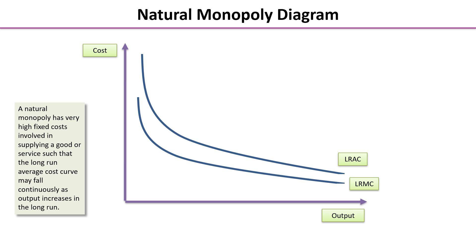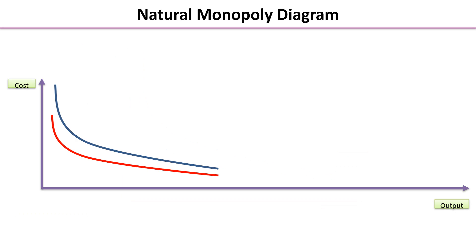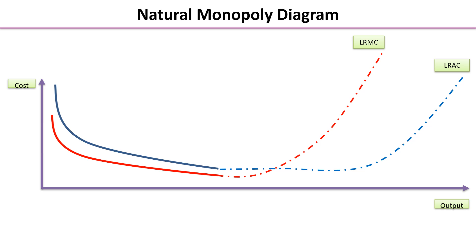We've got the long-run marginal cost below the long-run average cost. This can be difficult to imagine, so on the next diagram I'll show what it would look like with a much larger market to serve. If we extend the long-run marginal cost curve, the long-run average cost curve would actually be the normal U-shaped curve. When talking about natural monopoly, we are just looking at the first part of both the marginal cost and average cost curves.